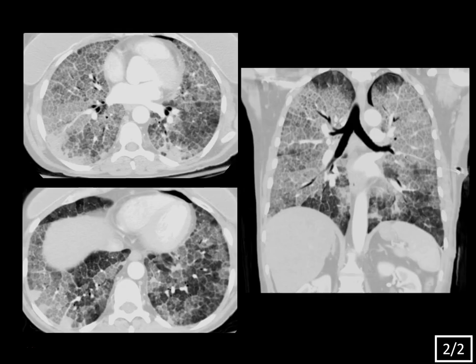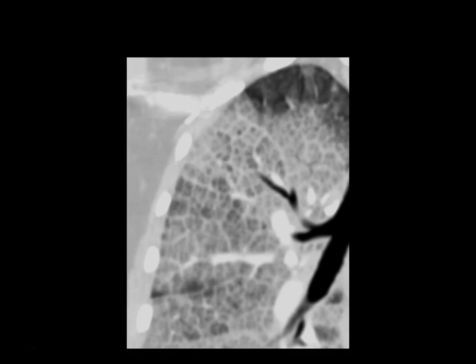Looking at the CT scan, there's extensive smooth interlobular septal thickening with overlying diffuse ground glass opacity. Ground glass means an opacity that you can see through — you can see the underlying bronchovascular structures, similar to looking through a smoky pane of glass — compared to airspace opacity, which you can't see through; that's a dense consolidation. There's also a small left apical pneumothorax, a nonspecific finding seen in chronic interstitial lung disease. Zooming into the coronal reformatted image, you can better see the interlobular septal thickening and overlying ground glass opacity. This pattern is known as crazy paving.